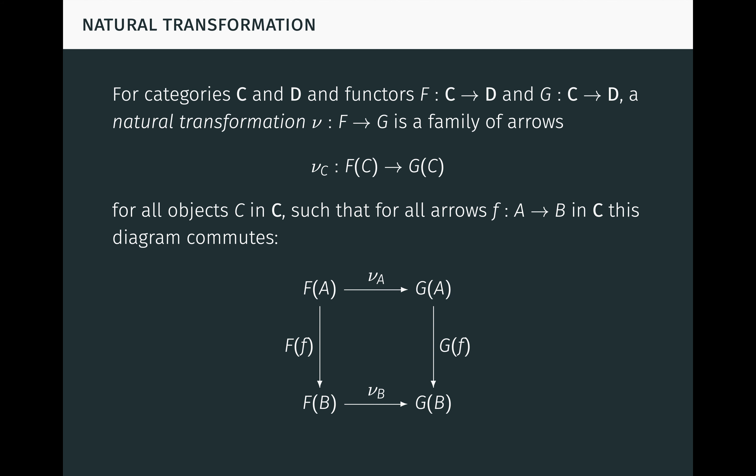This definition is just a generalization of what we've already seen with swapping of products. Note that the arrow nu C is often called a natural transformation, or is said to be natural in C, although technically speaking it's only a single component of the natural transformation. This abusive language is convenient and doesn't usually cause any confusion.